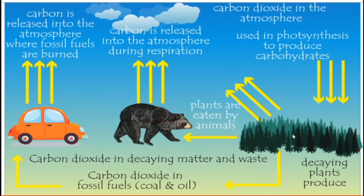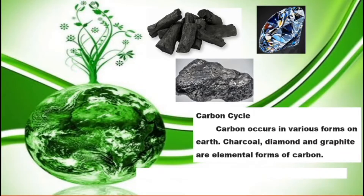This cycle is a good explanation to understand the carbon cycle. Carbon occurs in various forms on Earth — not only one form. It exists as diamond, charcoal, and graphite. These are different elemental formations of carbon.